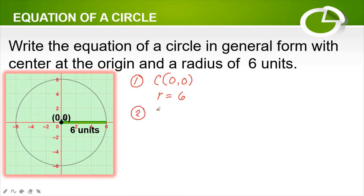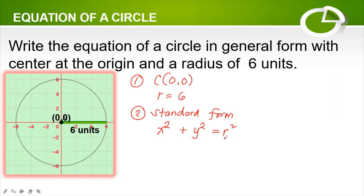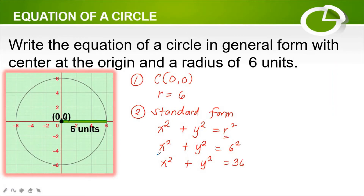The second step is we are going to write first in standard form of the equation of the circle. If you observe, the center is at the origin, so we will use the formula x squared plus y squared is equal to r squared. We replace r with 6, so this becomes x squared plus y squared is equal to 6 squared, which simplifies to x squared plus y squared is equal to 36. This is the standard form of the equation of the circle with center at the origin and a radius of 6 units.